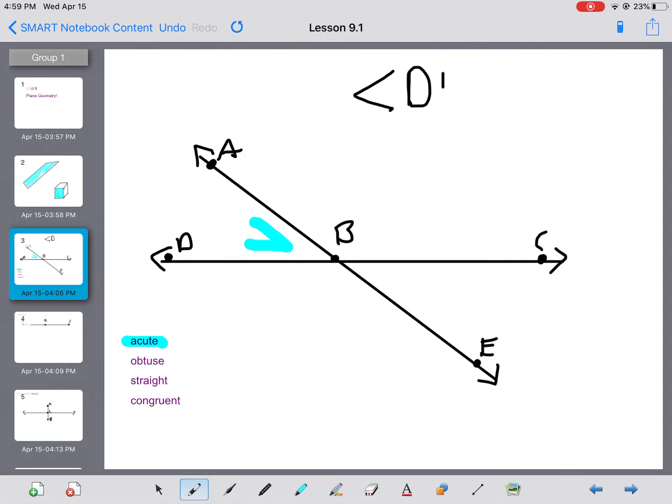We can write a name of an acute angle by doing our angle symbol and then doing angle DBA. Another way to write that same angle is to write angle ABD. Notice that both times, my inner letter is the vertex of that angle. I cannot write angle ADB. That would not describe the angle I'm talking about. Another way I can do is I can write angle B. So that's an acute angle. My other acute angle is over here, angle CBE. Those are both less than 90 degrees.